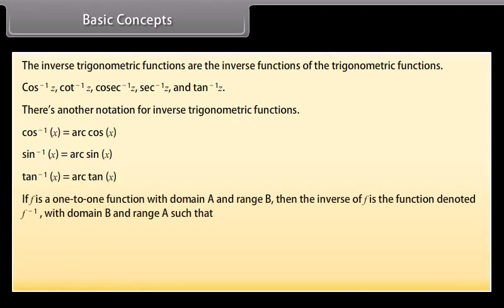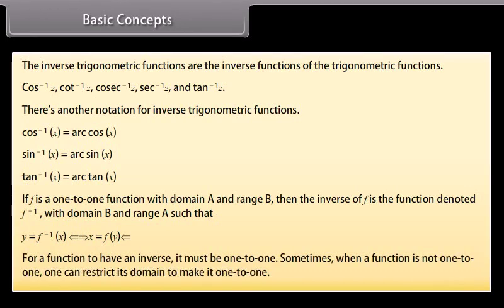Recall that if f is a one-to-one function with domain A and range B, then the inverse of f is the function denoted f⁻¹ with domain B and range A, such that y = f⁻¹(x) if and only if x = f(y). For a function to have an inverse, it must be one-to-one. Sometimes, when a function is not one-to-one, one can restrict its domain to make it one-to-one.